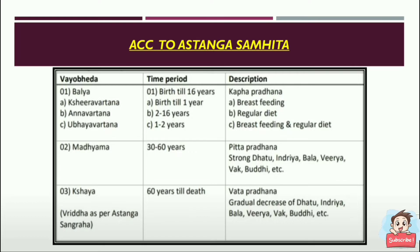According to Ashtanga Samhita, he also classified into 3 parts. First is birth till 16 years — called Balya — and is Kapha Pradhana. This is sub-classified: birth till 1 year is Shira Vartana, during which breastfeeding is done; 1 to 2 years is Ubhayavartana, with both breastfeeding and regular diet; and 2 to 16 years is Anna Vartana, where regular diet is followed.